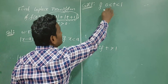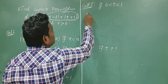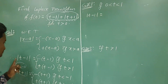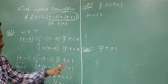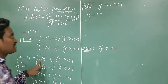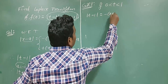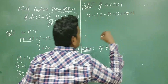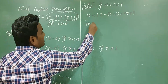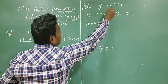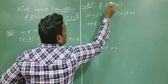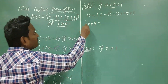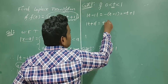If t value is between 0 and 1, what is modulus of t minus 1? Here t is less than 1, so it is minus of (t minus 1). And what is modulus of t plus 1? Here t value is greater than 0, so for t greater than 0, modulus of t plus 1 is always t plus 1.